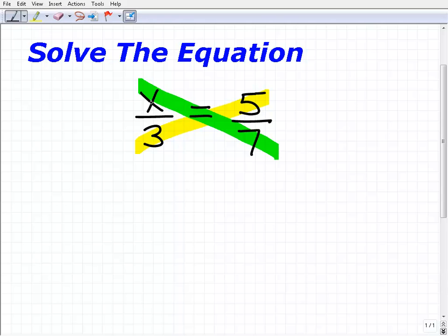So let's rewrite this in a different way. So x times 7 is 7x. I can write that on the left-hand side of the equation. And 3 times 5 is 15. I can write that here on the right-hand side of the equation.